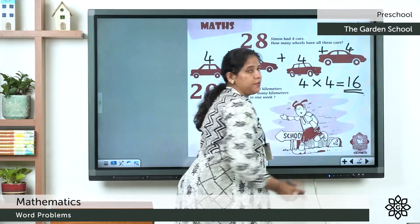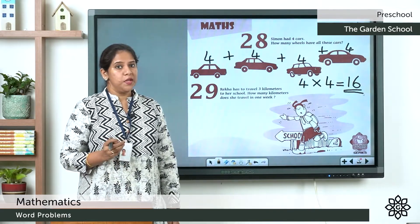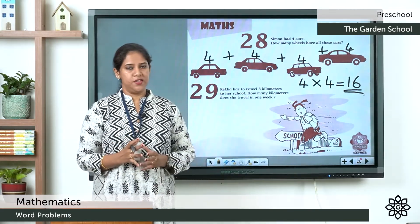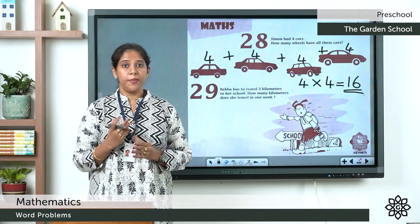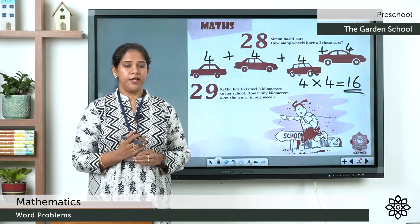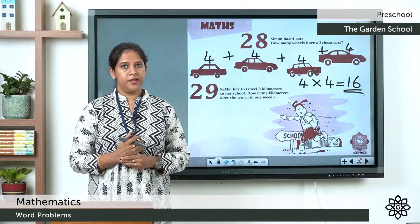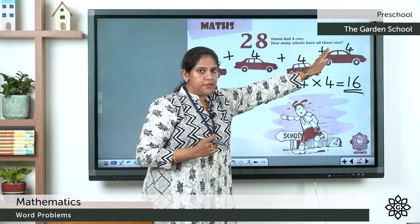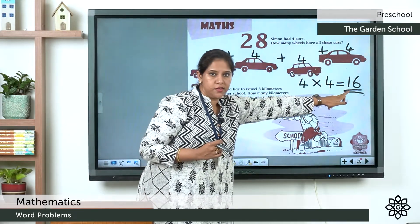Repeated addition can be solved using the multiplication method — we learn how to multiply. So this is repeated addition, and the answer is 16.